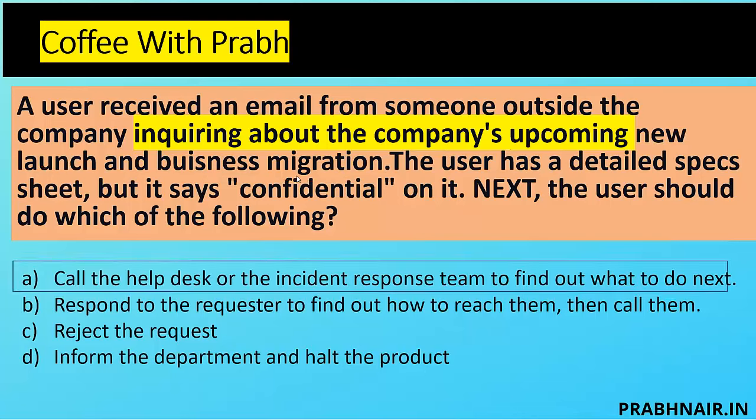Always remember: whenever an incident is reported, we need to confirm it. Whenever suspicious activity occurs — or even seemingly normal activity — we first raise the ticket and request the incident management team's guidance on what to do next. In this case it was a suspicious phishing attempt, which is why we reached the incident response team. The answer is A.